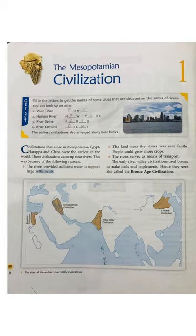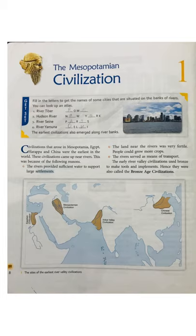Hello children, let's start the first chapter: Mesopotamian Civilization. In this chapter, we will learn about Mesopotamian Civilization — how we come to know about it, that means its sources, its origin, its cities, social classes, religion, occupation, trade, commerce, its major achievements, and its decline also.